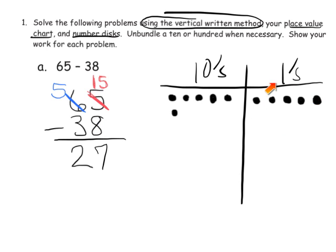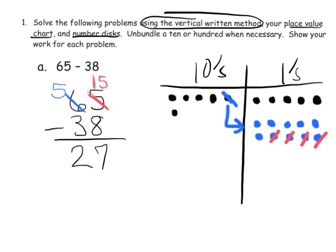When we unbundle that ten, we get ten ones, so now we have fifteen ones — and that's enough to take away eight. We remove eight ones, and that leaves us with seven ones. So our answer in the ones column is seven.